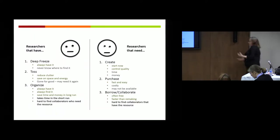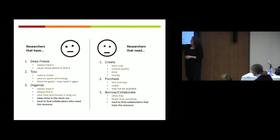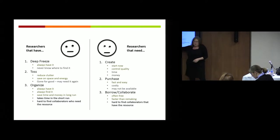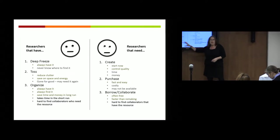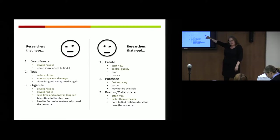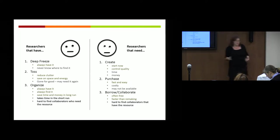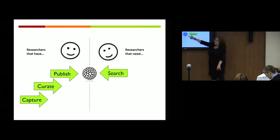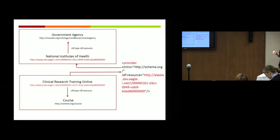Here we have our two unhappy researchers. This guy has some things he has in Deep Freeze — he puts them somewhere but he can't find them again, and he's tossed a lot of it away because they don't need it anymore. And we've got someone who describes her resources, but they're siloed — she can't get them out. We've got this person who wants that resource but doesn't know it exists, so they create it themselves, spend a lot of money acquiring it, or can't find it because there's no discovery system. Eagle Eye was created to be the intersection between these two now-happy researchers.